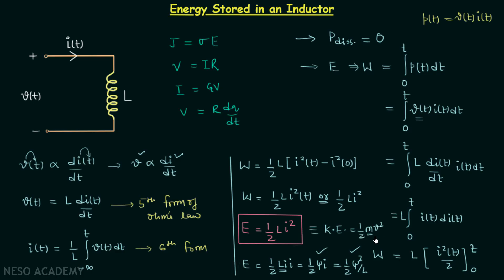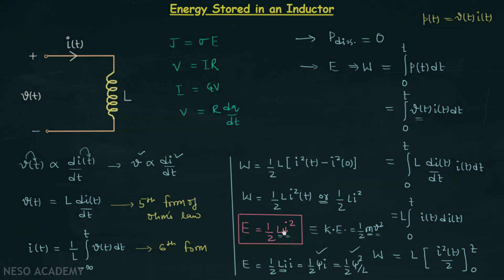Here, m is the mass and v is the velocity. In place of m we have L, and in place of velocity we have current I. Try to remember this formula because it will be used throughout this course. Now I will end this lecture here — see you in the next one.